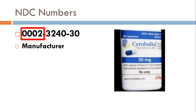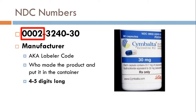The first portion is the manufacturer, also known as the labeler code. It's who made the product and put it into the container, and it's usually four to five digits long. In this case, Lilly makes Cymbalta and they have 0002. This could certainly be a question on your exam, so pay attention to which sections stand for what. The first portion of an NDC number is the manufacturer.